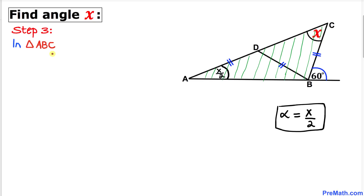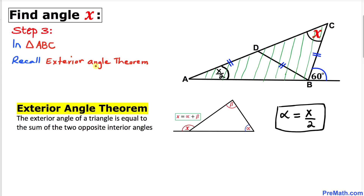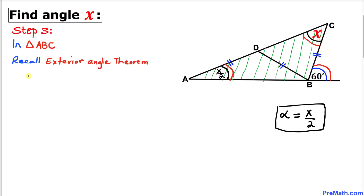Here's our final step. Let's focus on triangle ABC and recall the exterior angle theorem once again. We can see that angle 60 degrees is our exterior angle, and it equals the sum of the two opposite interior angles X and X over 2. So therefore X plus X over 2 equals 60 degrees, which is the same as 3X over 2 equals 60 degrees.